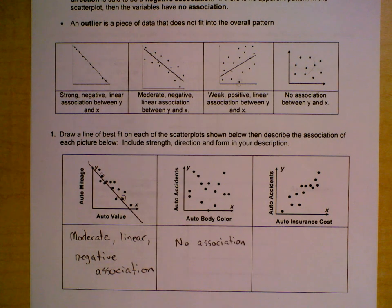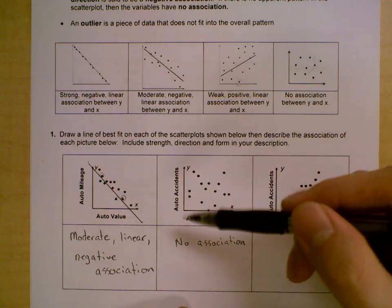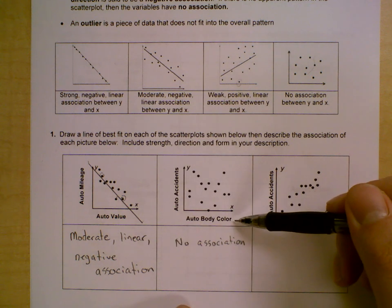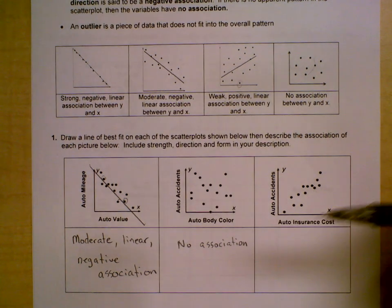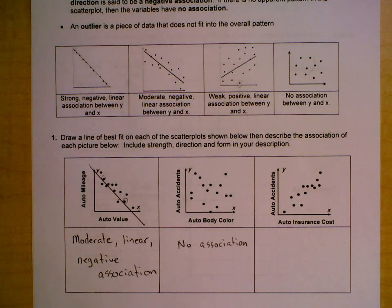I can't tell if it's positive, I can't tell if it's negative, I can't tell if it's linear. It's just very scattered. And anytime it's very scattered, that means there's going to be no association. And if we look at what the table is saying, we've got auto accidents and auto body color. It probably makes sense that there's no association between the color of your car and the amount of accidents you get into.